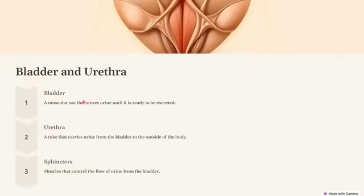Once urine is formed, it travels down the ureters to the bladder where it is stored until ready to be excreted. The bladder is a muscular organ that expands as it fills. When it reaches a certain volume, stretch reflex signals to the brain promote the urge to urinate. We have internal and external sphincters — when they both relax, voiding of urine occurs. The signal to relax comes from the brain via stretch receptor signals.